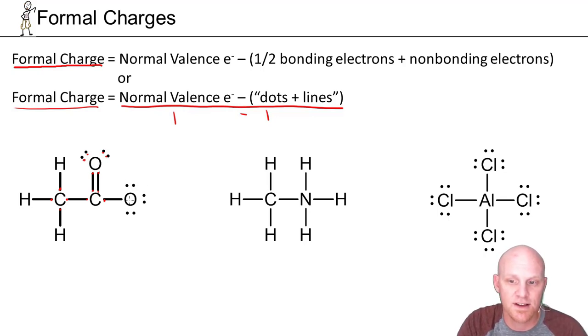And finally for this last oxygen, six minus, in this case one line, and one, two, three, four, five, six dots. So six minus a total of seven equals negative one. And so we'd write a negative formal charge next to the oxygen here. He's the only atom in this structure that's got a formal charge.